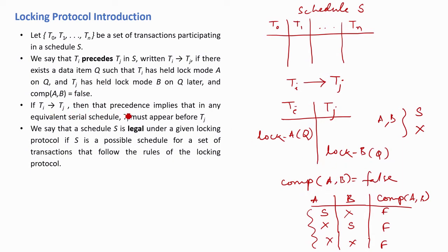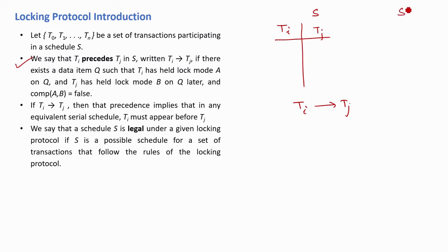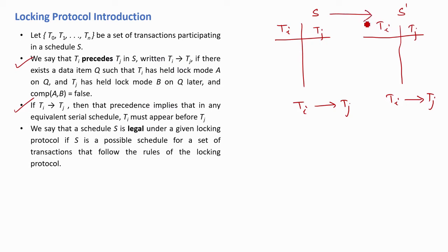If ti precedes tj, that precedence implies that in any equivalent serial schedule, ti must appear before tj. So if in schedule S we have ti preceding tj, then in the corresponding equivalent serial schedule S', ti must also precede tj.